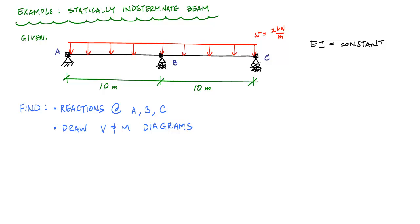Welcome back to some structure-free learning. In this video, we're going to do a problem for a statically indeterminate beam using the method of superposition. We want to calculate the reactions at points A, B, and C, where A is pinned, B is a roller, and C is a roller. We have a uniformly distributed load at 2 kilonewtons per meter. This is called a continuous beam, and we also want to draw the shear and moment diagram.